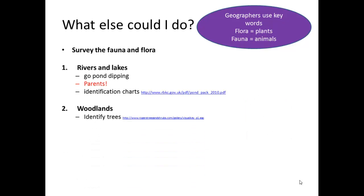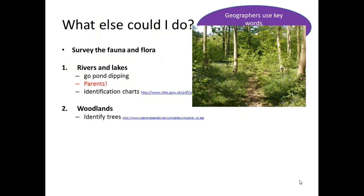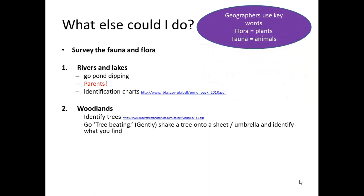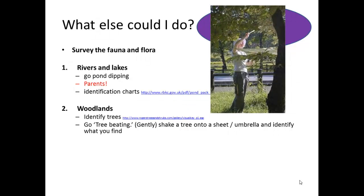When you're looking at woodlands you can do some tree identification. Again, this is a good site for online identification charts. Quite an exciting thing to do is to go tree beating. What you do is you gently shake branches of the tree onto a sheet or an umbrella and try to identify any animals that you may find in that sample that you've collected.